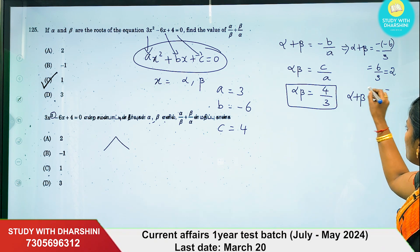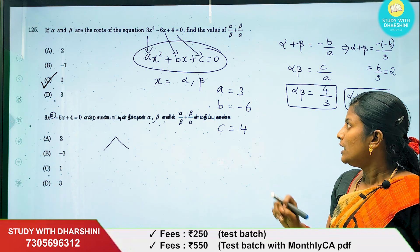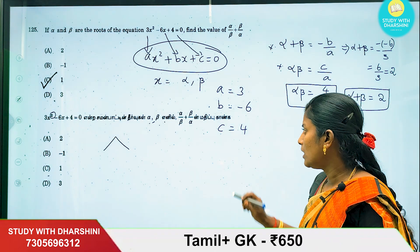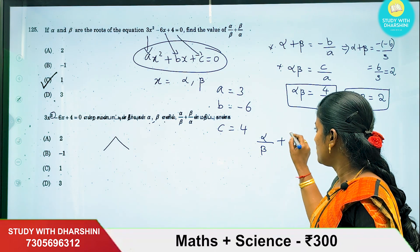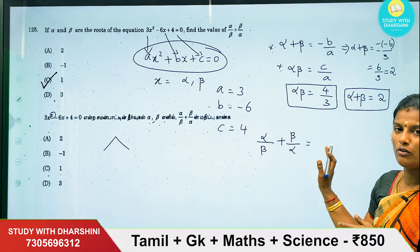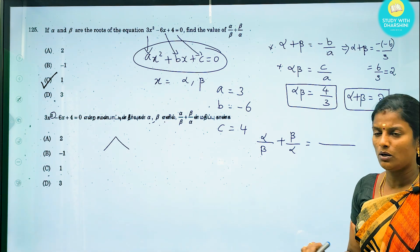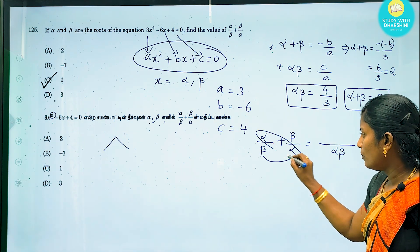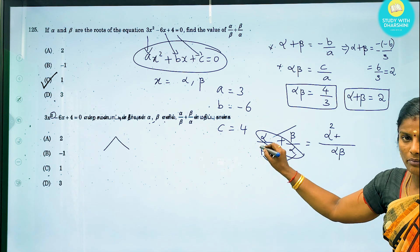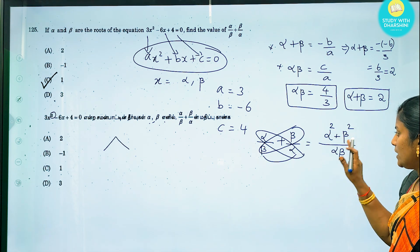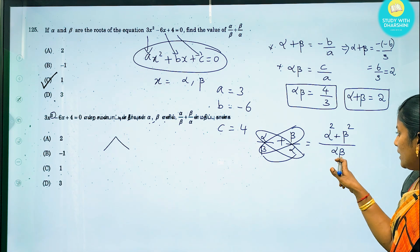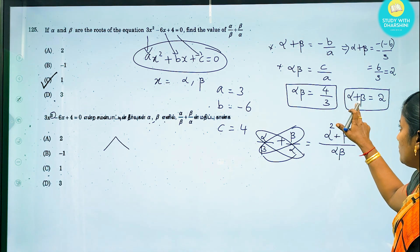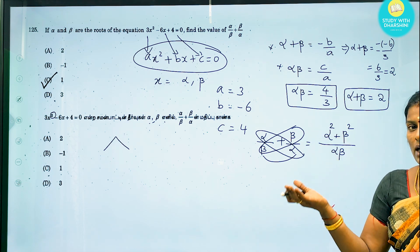Now we solve alpha by beta plus beta by alpha. These are fractions, so we combine them: the numerator becomes alpha squared plus beta squared, and the denominator is alpha times beta. We know the values of alpha plus beta and alpha times beta, so we can simplify this.